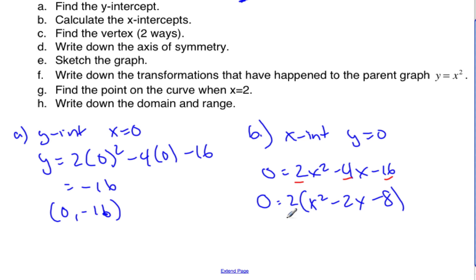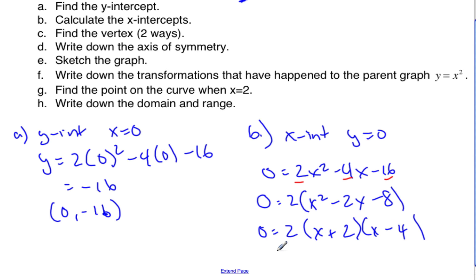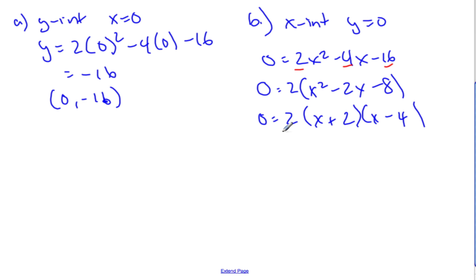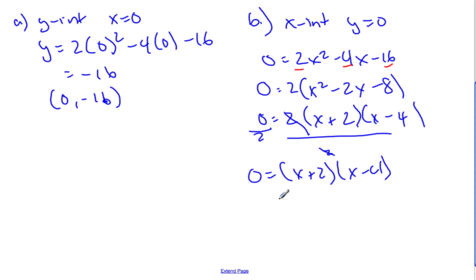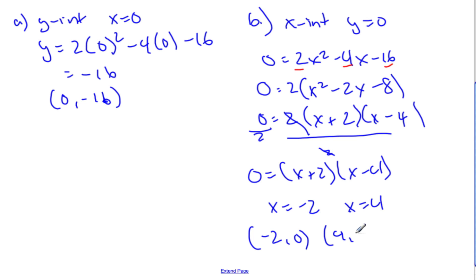Factoring x² − 2x − 8, we need two numbers that multiply to give negative 8 and add to give negative 2: that's 2 and negative 4. So we get 2(x + 2)(x − 4) = 0. Dividing both sides by 2: (x + 2)(x − 4) = 0, giving x = −2 and x = 4. So the x-intercepts are (−2, 0) and (4, 0).